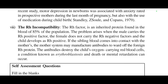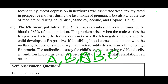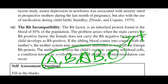Finally, we come to RH incompatibility. Blood groups are A, B, AB, and O. The positive and negative aspect of blood groups is the RH factor. Those who have the RH protein are RH positive, and those who do not have it are RH negative. RH is a protein in the blood, and about 85% of the population carries this protein. If the mother is RH negative and the father is RH positive, this can affect the baby.